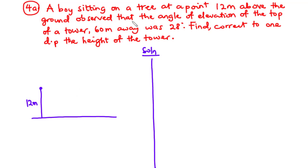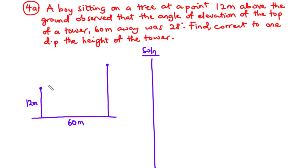Now he observed that the angle of elevation of the top of a tower 60 meters away. So assuming that this is the tower, which is 60 meters away from the tree — so 60 meters — he observed that the angle of elevation of the top of the tower, which is this position, is 28 degrees. So from the position of the boy, this is going to be the horizontal line of sight. And then he raises his head and realizes that the angle of elevation of the top of the tower is 28 degrees.